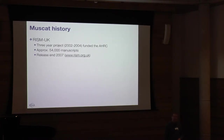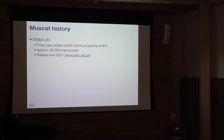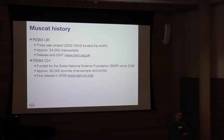Muscat was actually started in the UK — it was the first project started by RISM UK. RISM is organized with a central office in Germany and independently organized groups in about 30 countries. The UK group, hosted by the British Library, started this project with an AHRC grant. The first version of Muscat was about 10 years ago in 2007, putting about 50,000 manuscripts online. In Switzerland we were doing something very similar, so we approached them and essentially took it over. Since then we've been funded as a research infrastructure for musicology, developing Muscat through versions one, two, and now three, with about 80,000 sources published to our platform.